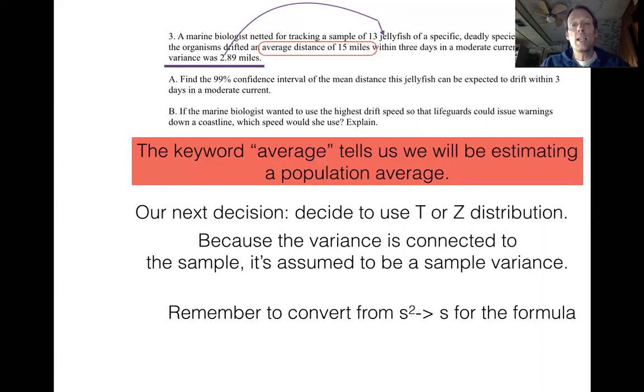And the one thing that you have to watch out for is the formula uses S. It doesn't use S squared, which is the variance. So you have to remember to take the square root of 2.89 when you go into the formula. Let's look at the next question.